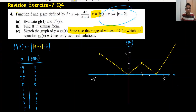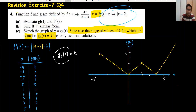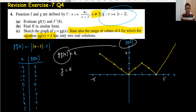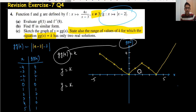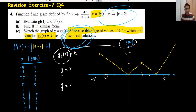The final part asks: state the range of values of k for which g∘g(x) = k has two real solutions. This means y = k is a horizontal line, and we need it to intersect the graph at exactly two points.